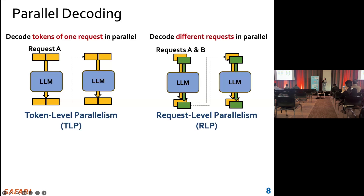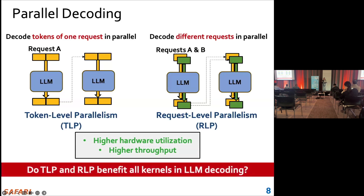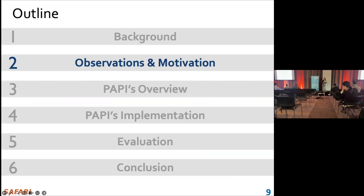So with TLP and RLP, parallel decoding can achieve higher hardware utilization and higher throughput. Our question is: do TLP and RLP benefit all kernels in LLM decoding? To answer this, let's characterize LLM kernels and find our observations and motivation.